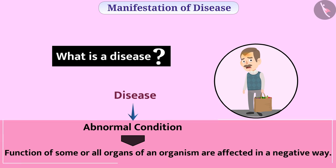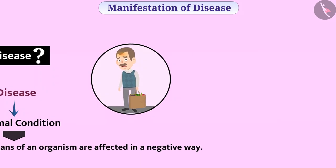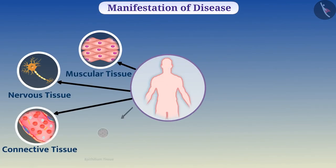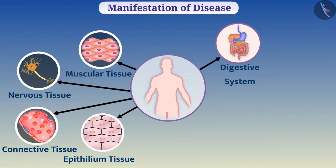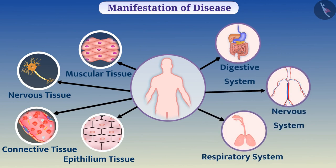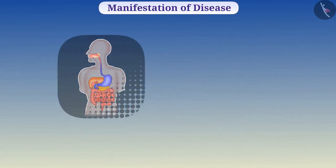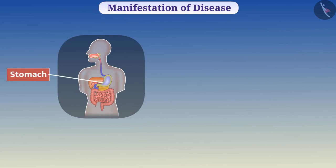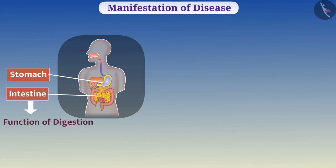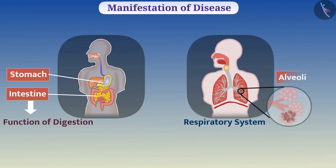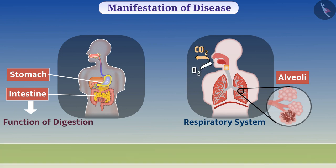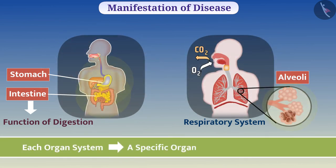Let's understand it. Different tissues in our body combine and form different organ systems. For example, in the digestive system, the stomach and intestine perform the function of digestion. Similarly, alveoli in the respiratory system exchange gases. In this way, in each organ system, a specific organ performs a specific function.